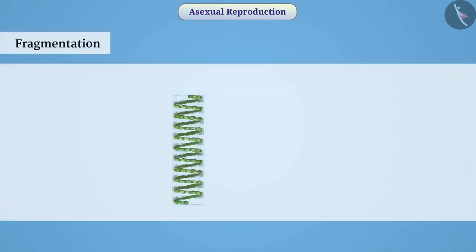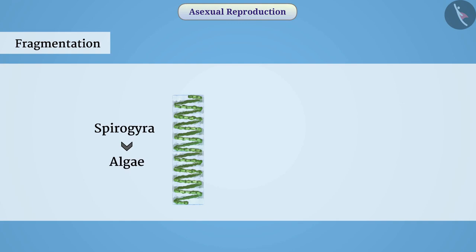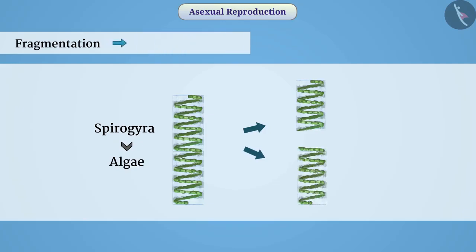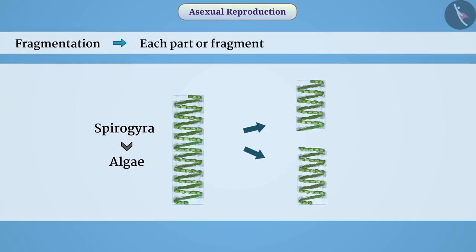Fragmentation. Some multicellular organisms such as spirogyra, which is an algae, have a simple body structure. Generally, such organisms are just a group of different cells. When they are fully grown, they break into small pieces, and each part or fragment develops into a new organism. This method of reproduction is called fragmentation.